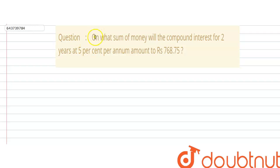In this question we have to find out on what sum of money will the compound interest for 2 years at 5% per annum amount to Rs 768.75.